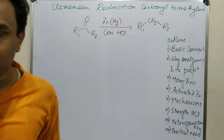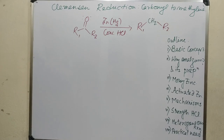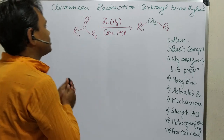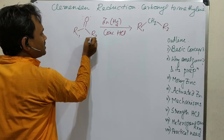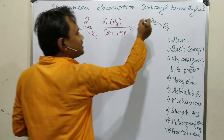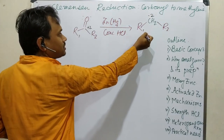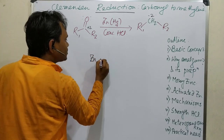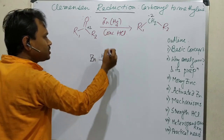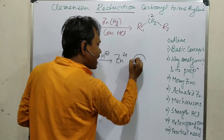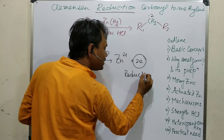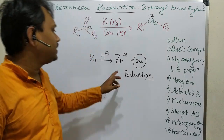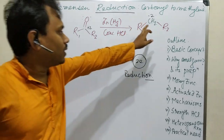This is a redox reaction, which means some part of the molecule will be reduced and some will be oxidized. What reaction is happening here: this carbon — R equals carbon — is in a +2 oxidation state, and it goes to a −2 oxidation state, so this is a reduction. Similarly, which part is being oxidized? Zinc is being oxidized, because in the presence of acid, zinc produces Zn²⁺ plus 2 electrons, and these electrons are responsible for the reduction.